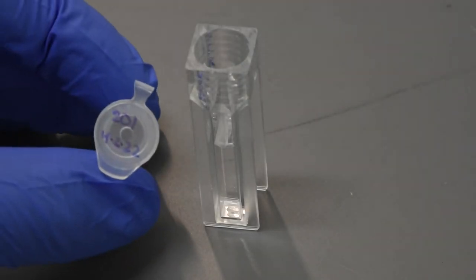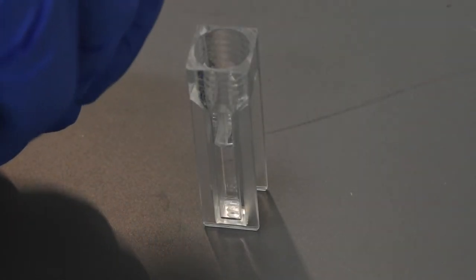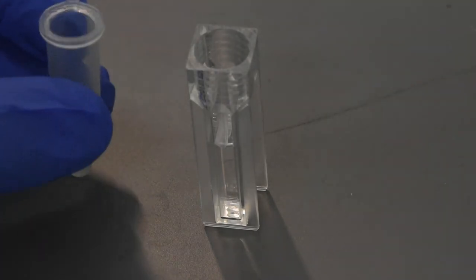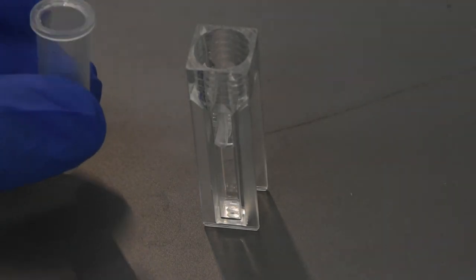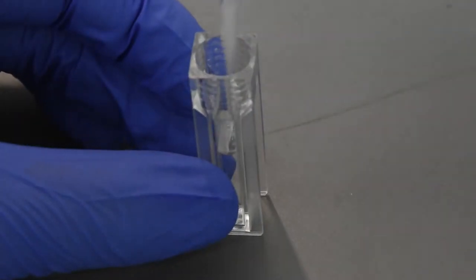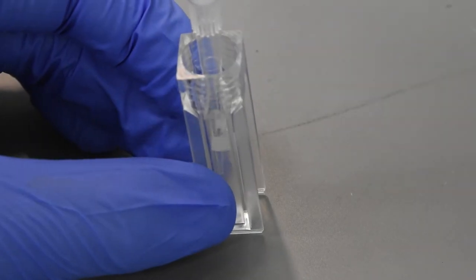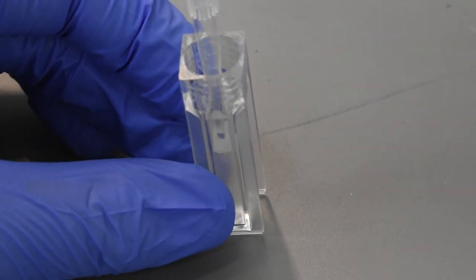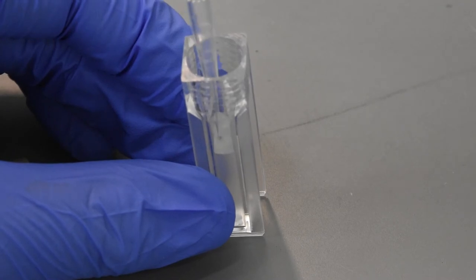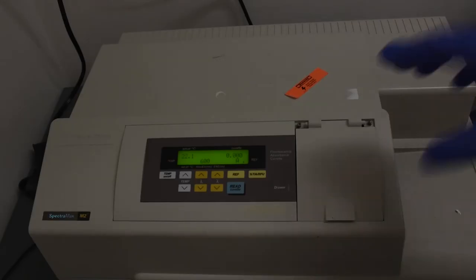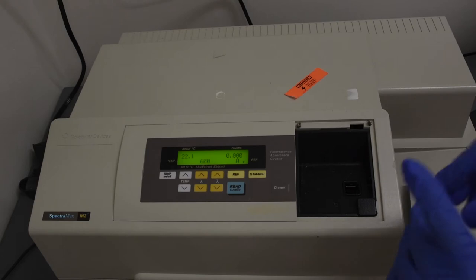In that same cuvette, add 50 microliters of cell suspension and pipette up and down to mix. The liquid should be evenly turbid. Measure the OD600 and record for each.